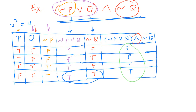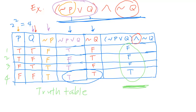That's the truth table for the given expression, and our final answer is the last column. The key is to memorize the symbols and truth tables for negation, conjunction, and disjunction, and to know how many possible combinations to construct using the formula 2 to the power of n. For example, with P, Q, R that's 2 to the power of 3, giving 8 possible combinations.